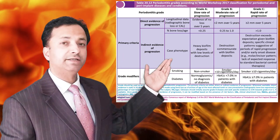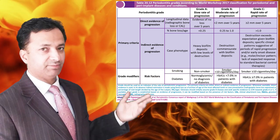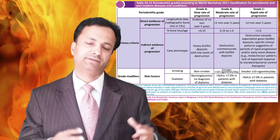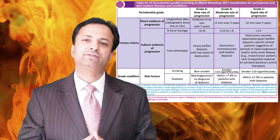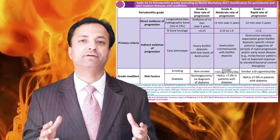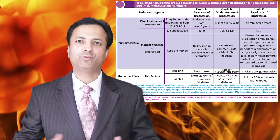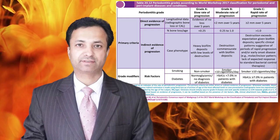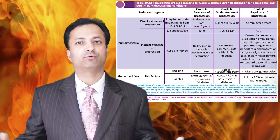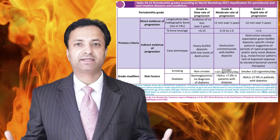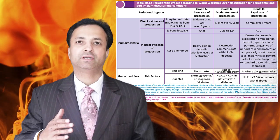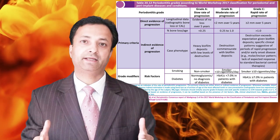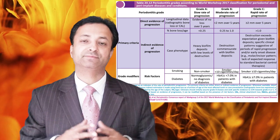This table describes the grades of the disease: Grade A, Grade B, and Grade C. The primary criteria determining the grade include direct evidence and indirect evidence of disease progression. Direct evidence is obtained from longitudinal radiographs over five years: no bone loss over five years is Grade A; bone loss less than 2 mm over five years is Grade B; bone loss equal to or more than 2 mm is Grade C. For indirect evidence, the percentage of bone loss divided by age is used: less than 0.25 is Grade A; 0.25 to 1.0 is Grade B; more than 1.0 is Grade C.